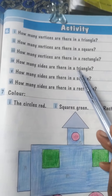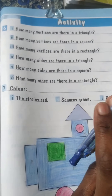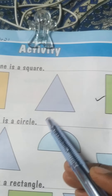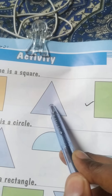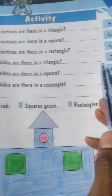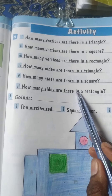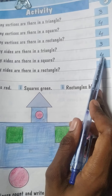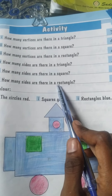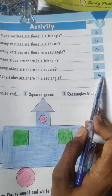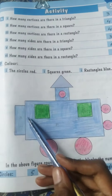How many sides are there in a triangle? Vertices are 3, so sides are also 3 — side 1, side 2, side 3 — so you will write 3. How many sides are there in a square? There are 4 sides in a square. How many sides are there in a rectangle? There are 4 sides in a rectangle.